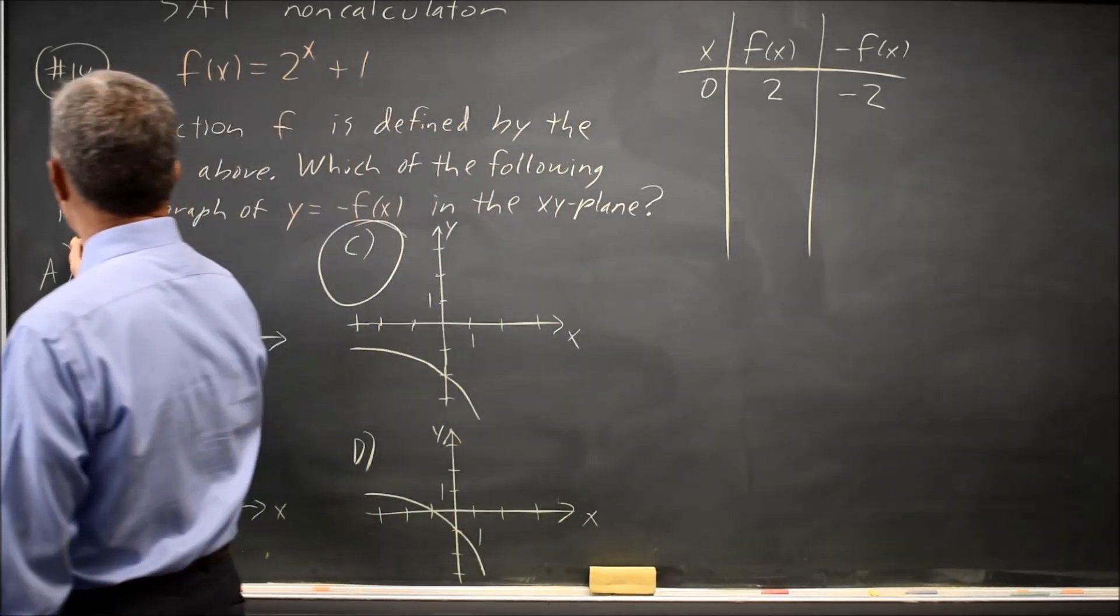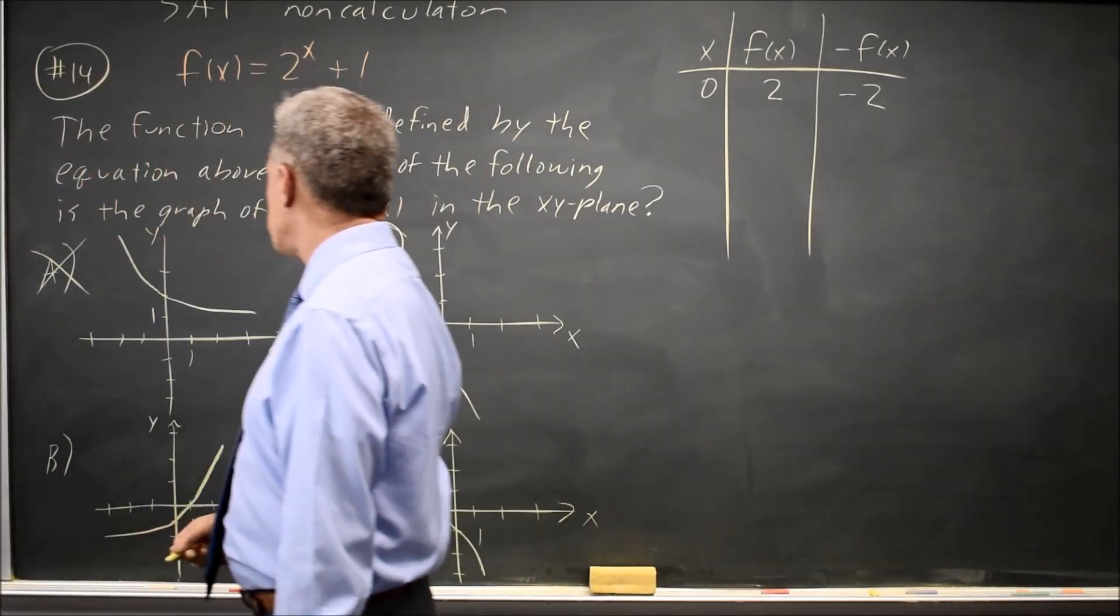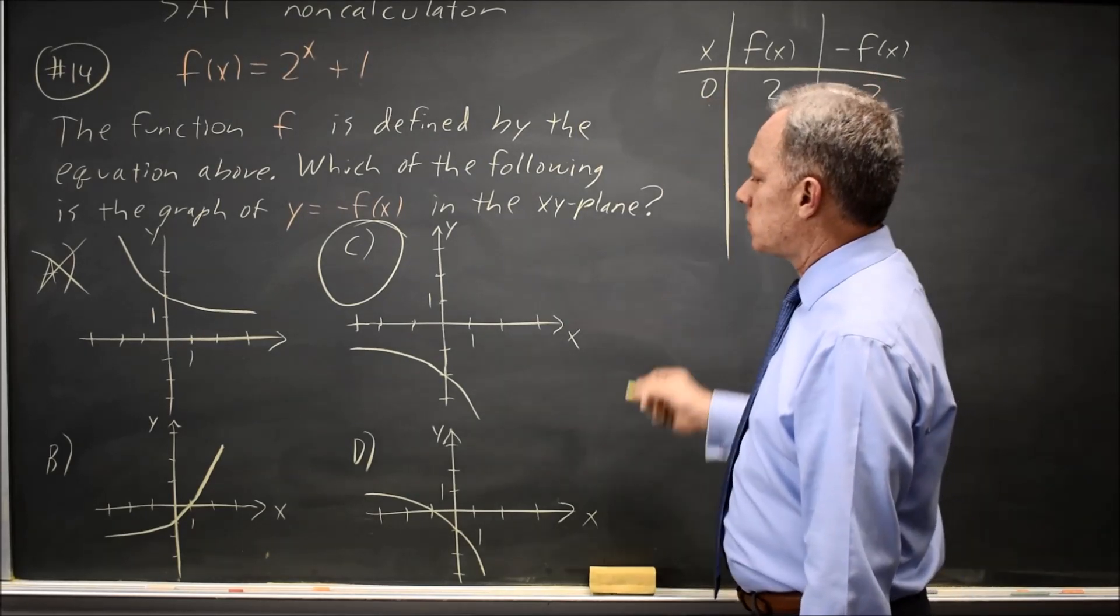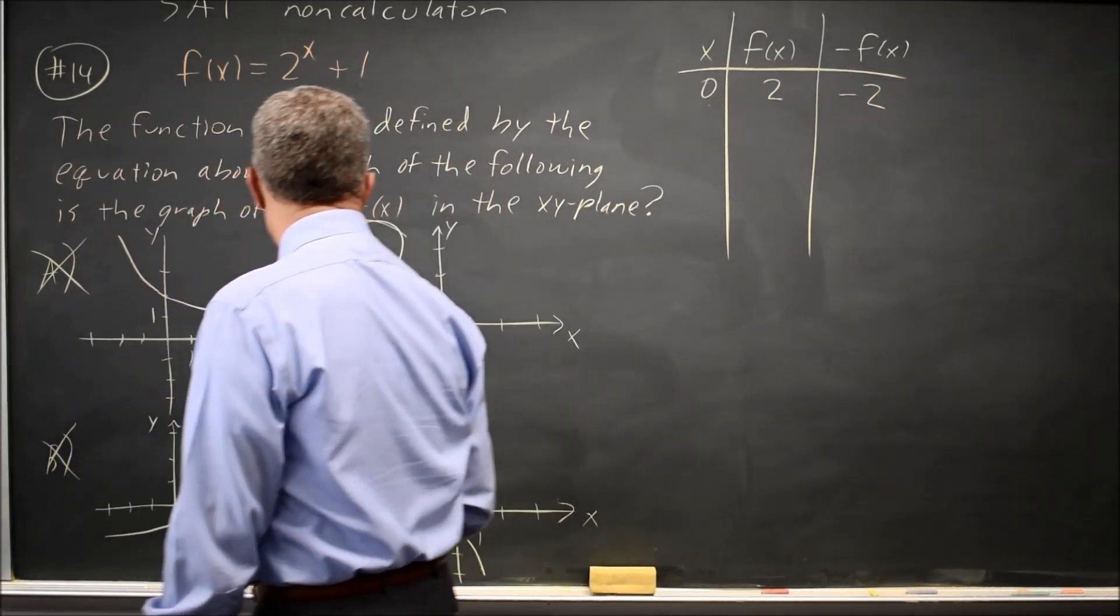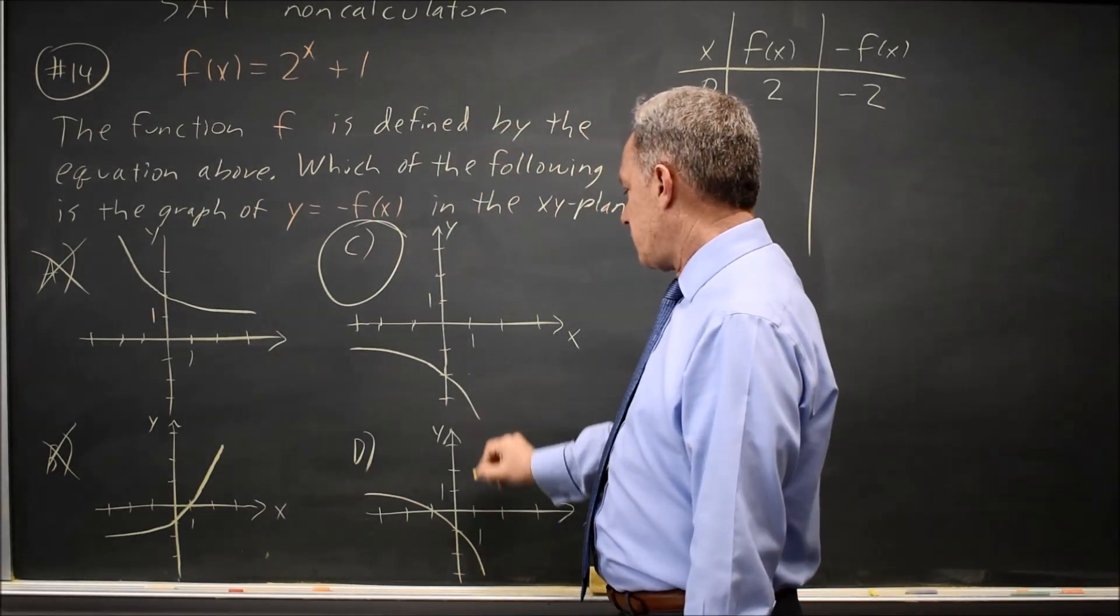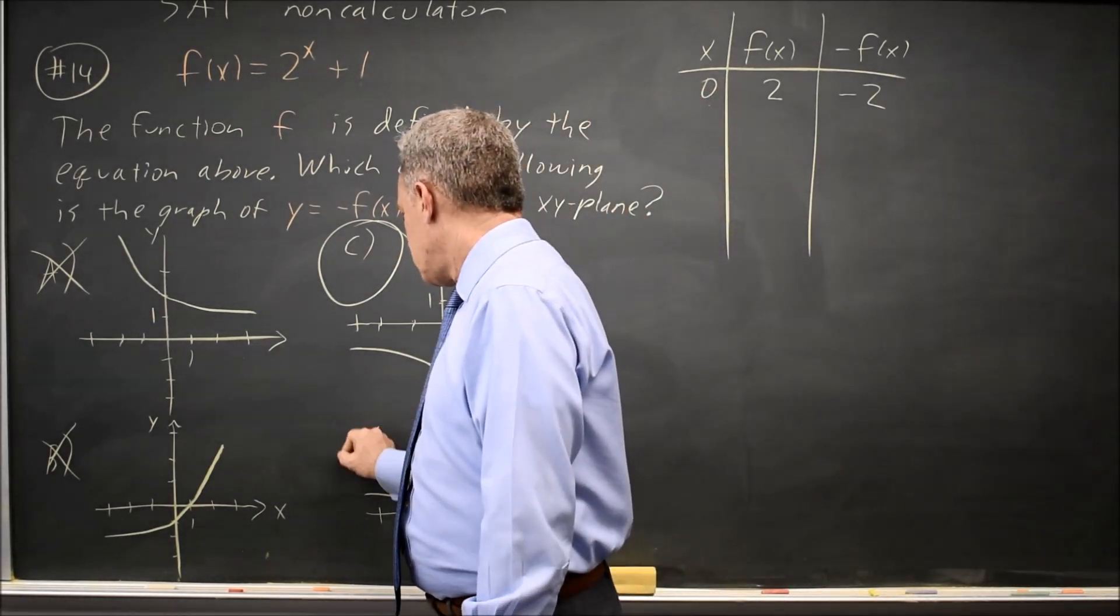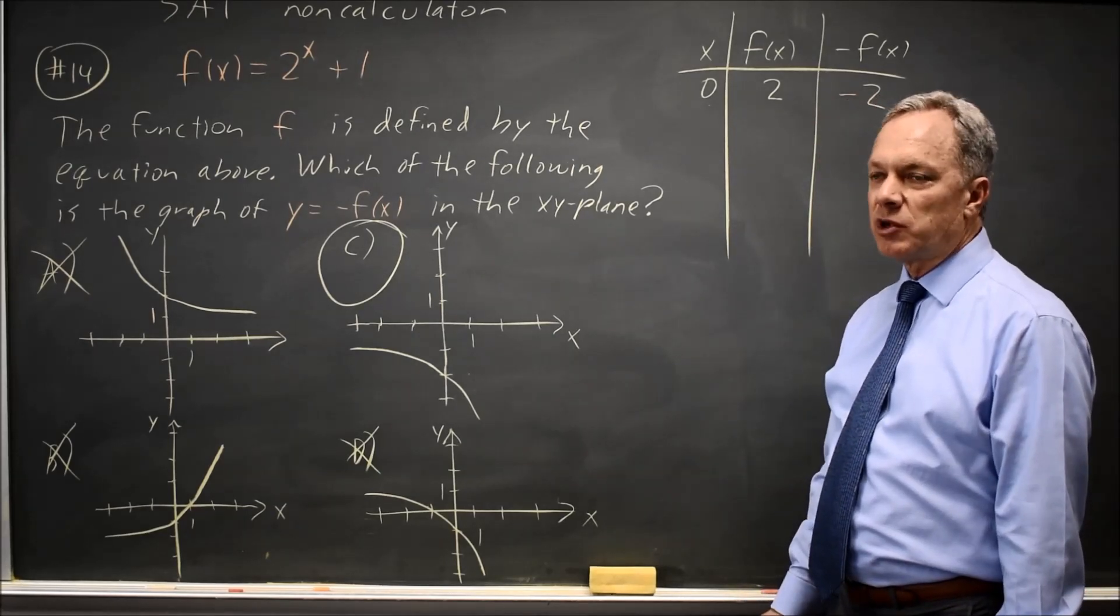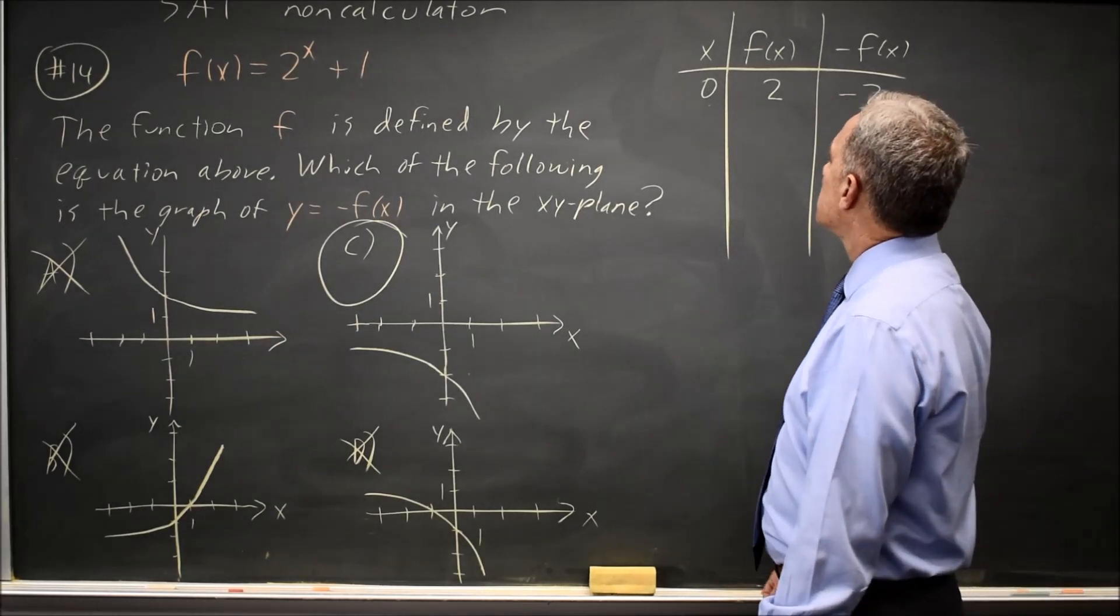Choice A does not go through the y-axis at negative 2, and the y-axis is where you should be when x is 0. Choice B goes through the y-axis at negative 1, so that's not correct. Choice C does go through there, and choice D goes through at negative 1, not negative 2. So choice C is the only one that matches at x equals 0.